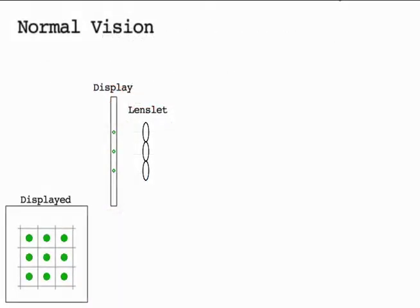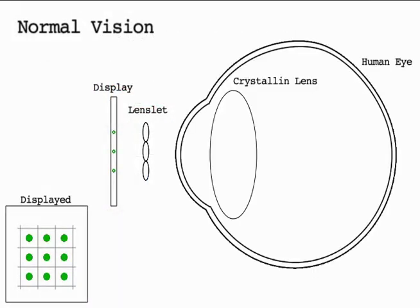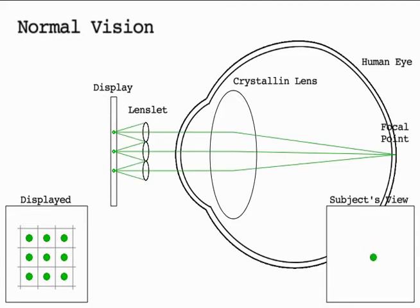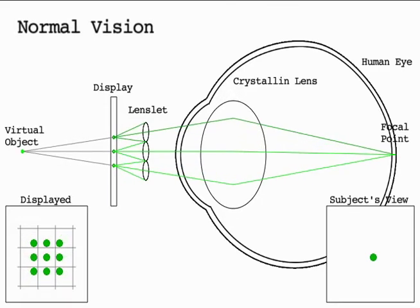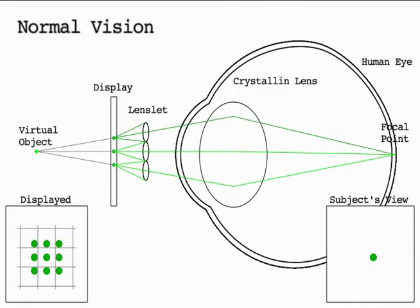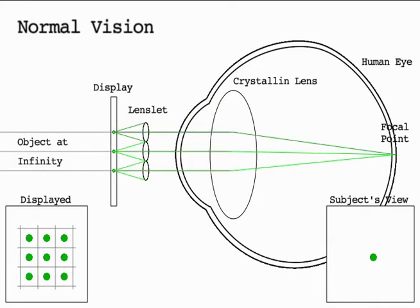Our system works by displaying a pattern that passes through an array of lenslets. This allows us to create virtual images at variable depths by changing the vergence of the rays that leave the lenslets. When a pattern is created at infinity, a normal eye will automatically focus at infinity, converging the light rays on the retina.